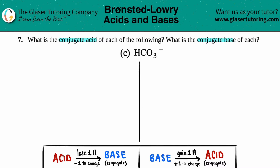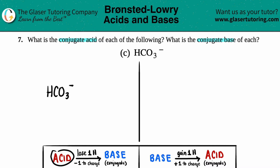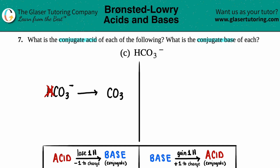So let's split this down the middle and work side by side. Let's find the conjugate base first — that means HCO3- is going to be acting as an acid. To go from an acid to its conjugate base, remember: a base always has one less hydrogen than its acid. So all you've got to do is find the H and get rid of it. What's left? CO3.